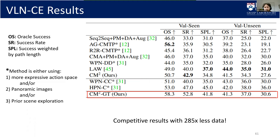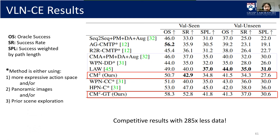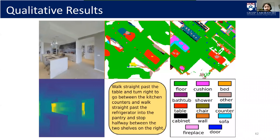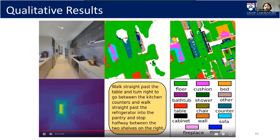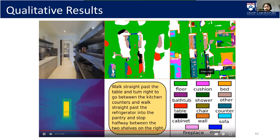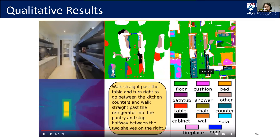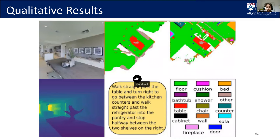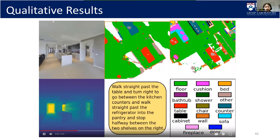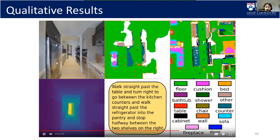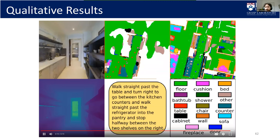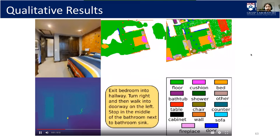With ground truth maps the system works very nicely, though you don't always have ground truth maps — you're frequently limited to what you can see. Here's a quick video: the red dots show the hallucinated waypoints on the predicted map, while the other view shows the ground truth map. It walks past the table, turns right, goes between the counters in the kitchen, spends a little time determining which pair of counters to go between, sees the refrigerator, goes past it, and stops in the hallway by the two shelves.